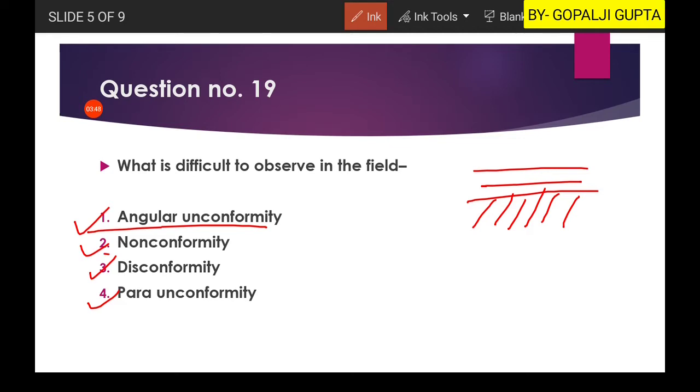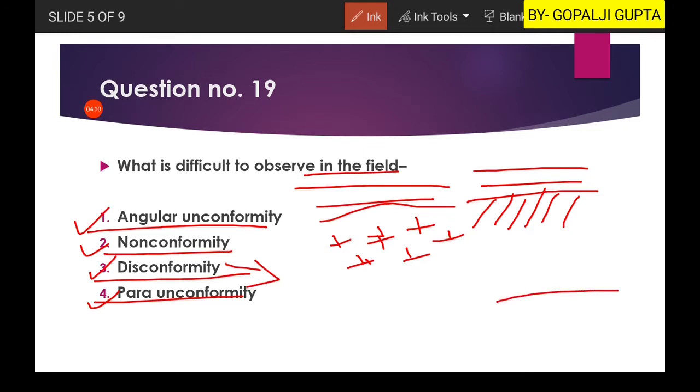If you will look at the nonconformity, it is also easy to recognize that we will get the very different lithology in the low-lying and upper crops. Then if you will look at the disconformity, it is also relatively easier than that of paraconformity. As in the disconformity you will find that there are horizontal layers and above that there are another horizontal layers, but we will find a relative eroded surface in between them.